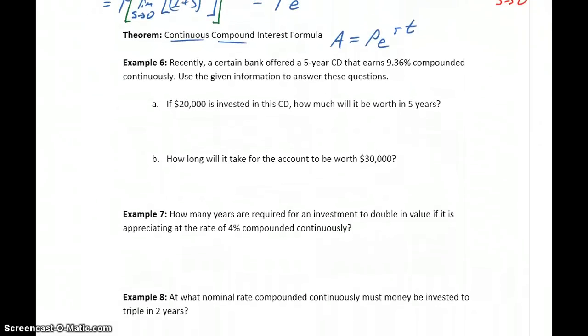So we have a couple of examples that we'll first look at setting up how we'll evaluate that, and then turn things over to Wolfram Alpha to actually complete these calculations for us. So in example 6, a bank that offered a 5-year CD earns 9.36% compounded continuously. If $20,000 is invested, how much will we have in 5 years?